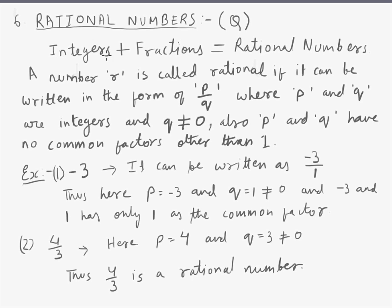Now if we move further into the classification, we come to rational numbers. So all the integers and fractions combining together are called rational numbers. A number R is called rational if it can be written in the form of P by Q, where P and Q are integers and Q is not equal to zero.